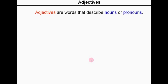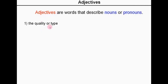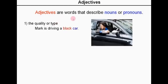Adjectives. Adjectives are words that describe nouns or pronouns. They give us more information about a noun or a pronoun — they modify a noun or a pronoun. For example, they can tell us the quality or type of the noun. Mark is driving a black car. Car is the noun, and the word 'black' is telling us more information about the car — it's describing the car. It's not a blue car, it's a black car.